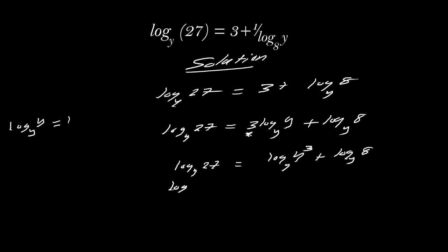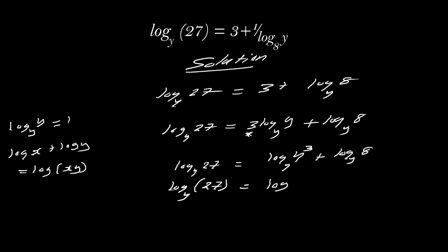On the right-hand side of the equation we join the two logs. Removing log to base y outside: if you have log x plus log y that is simply log of x times y. So on the right-hand side, removing log to base y outside, you remain with y³ times 8, since addition changes to multiplication when you remove the logarithm.